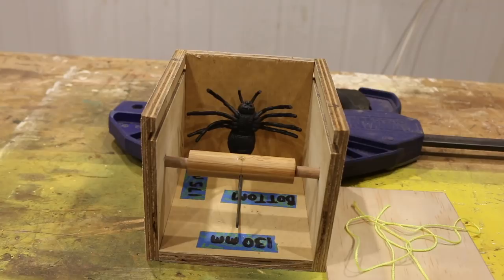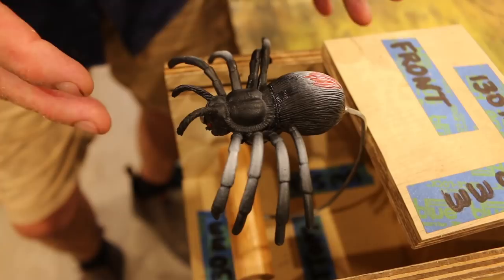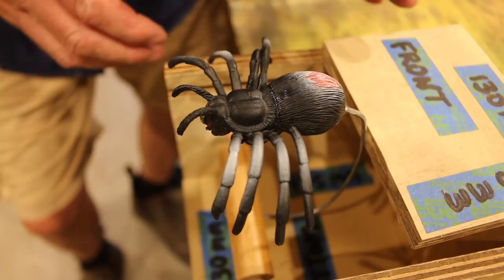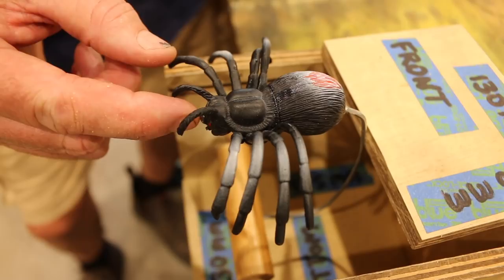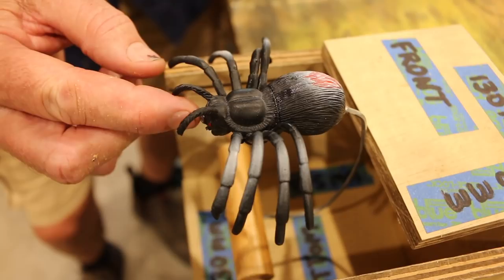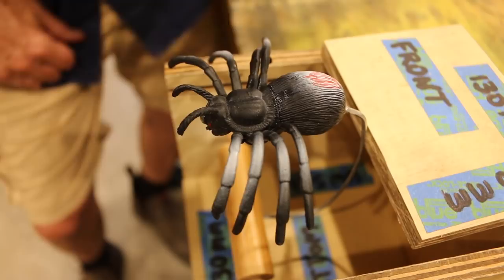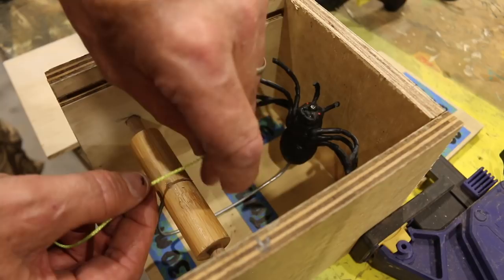And now all we need to do is to attach some string to the lid and to the axle, and then we're ready to glue everything together. Now, just in case you're wondering how I attached the spider to the coat hanger, I drilled a really small hole through the spider's bum and one through his mouth. And then I forced the coat hanger through the spider until it just came out the end right there. And then I applied a dab of glue there and there, and the job was done. Too easy.